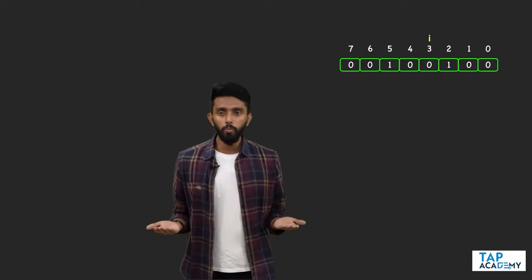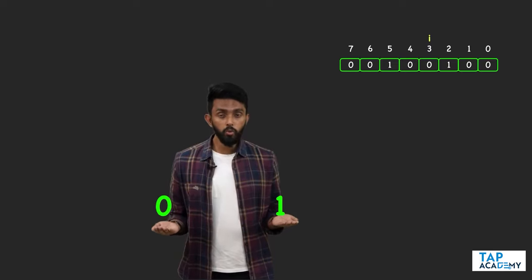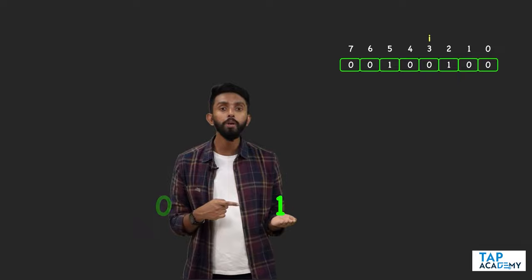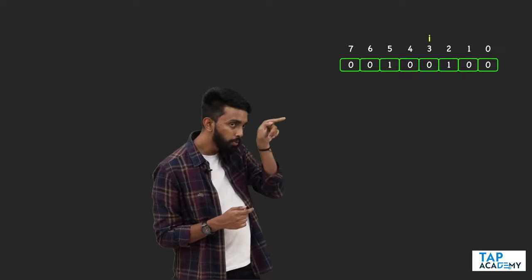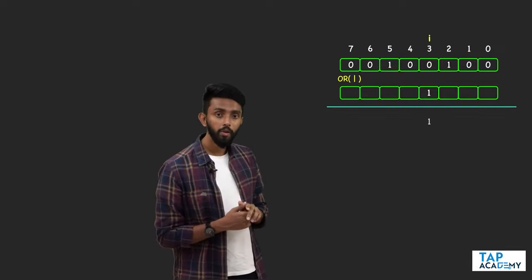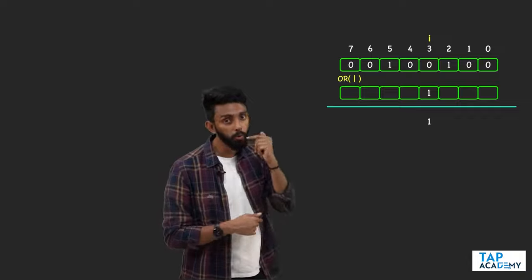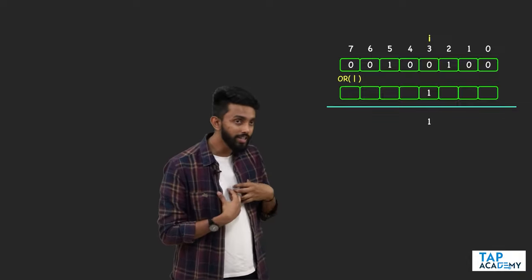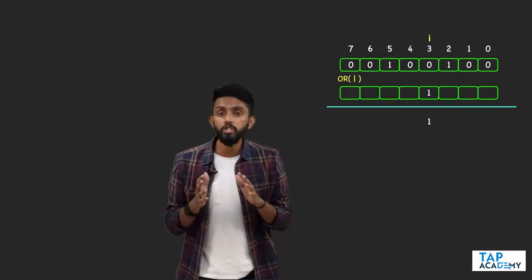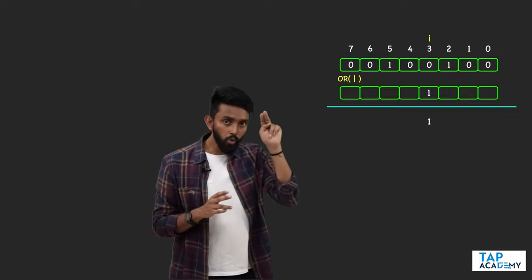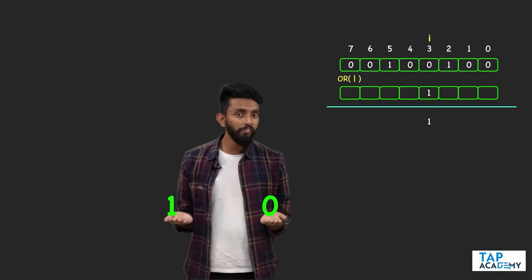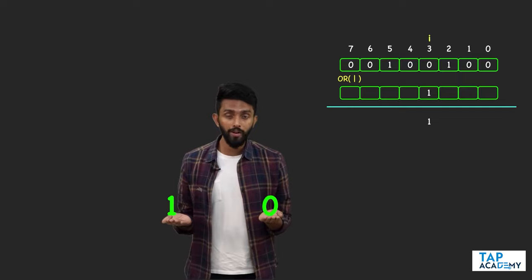We have two bits — zero and one. Which will you use to turn on that zero? Clearly it is one. So below that zero I'm putting a one and doing OR operation — zero OR one gives one, so from off it goes on. But the question says only switch on the ith bit — all bits to the left and right of i must remain unchanged. So for those bits I must use zero, because zero has no effect.